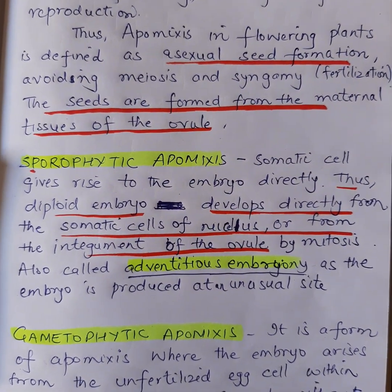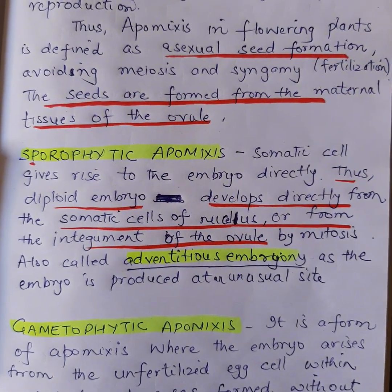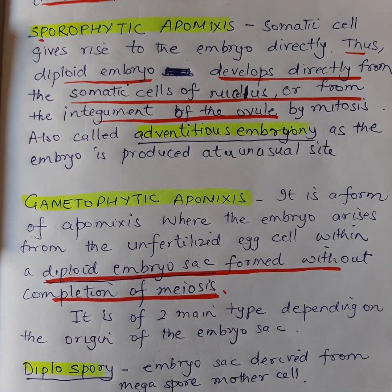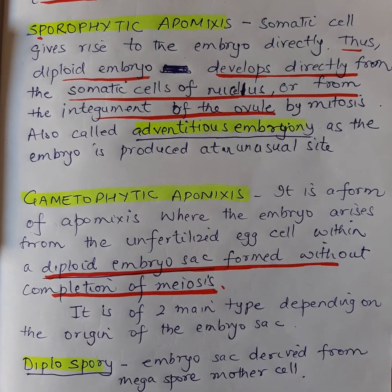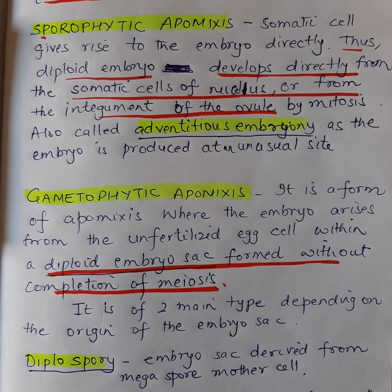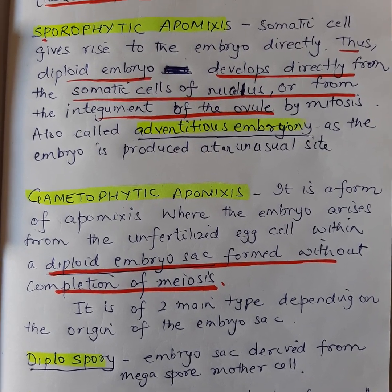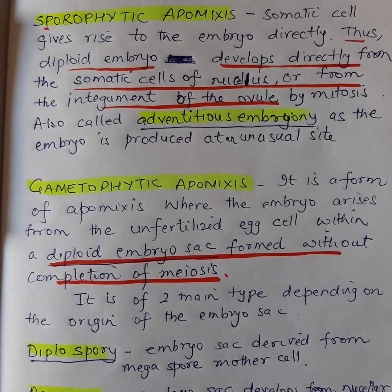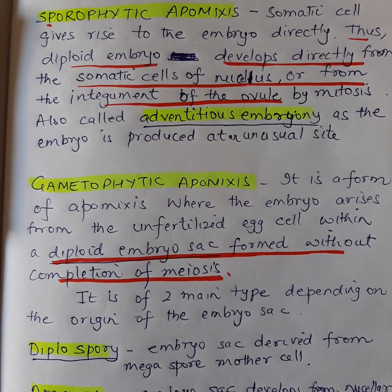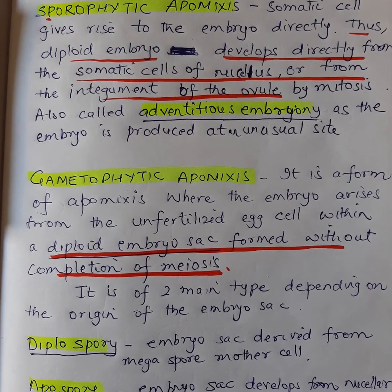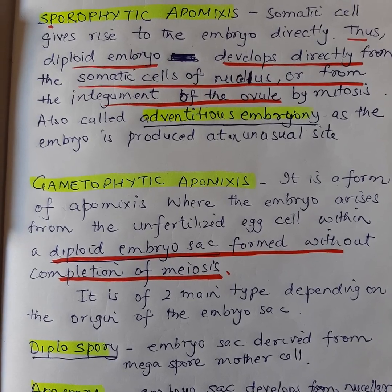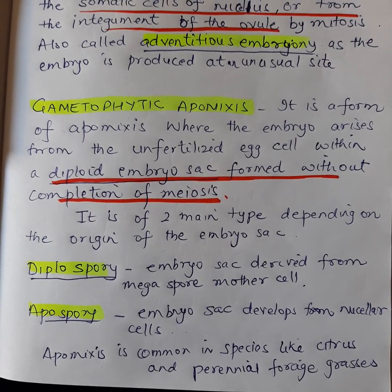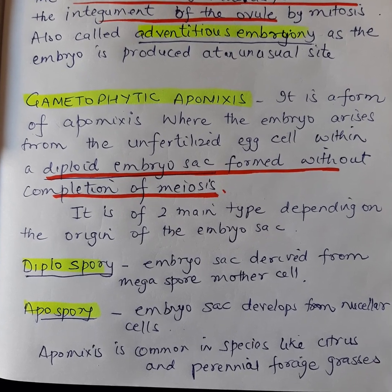The seeds are formed from the maternal tissues of the ovule. It is of two types. Sporophytic apomyxis is where the embryo develops directly from the somatic cells of the nucellus or the integument of the ovule by mitosis. It is also called adventitious embryony, as the embryo is produced at an unusual site. Gametophytic apomyxis is the second type.